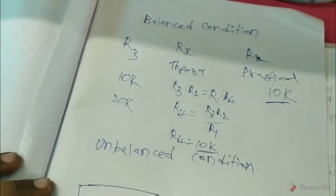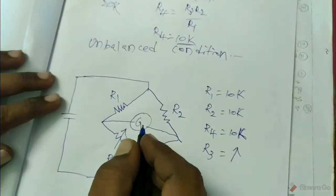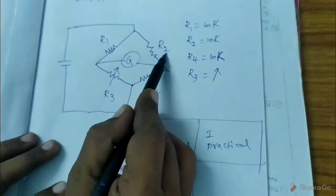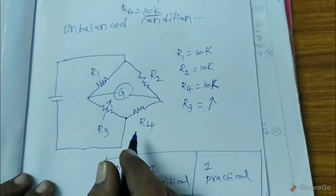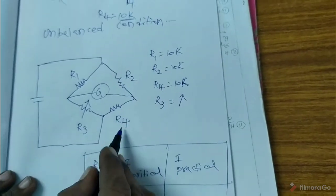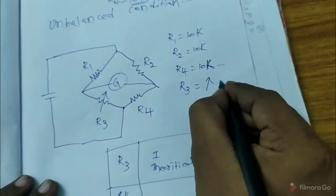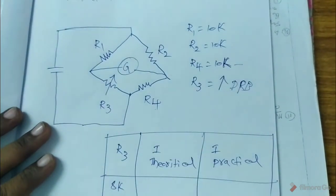That concludes Case 1 — the balanced condition — where the Wheatstone bridge is mainly used to find unknown resistance. Now for Case 2, the unbalanced condition. In the unbalanced condition, this circuit is used to find the current values. The same circuit is used with R1, R2, R3, R4, with R3 as the variable DRB resistor.